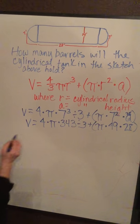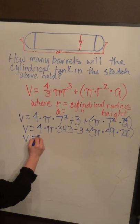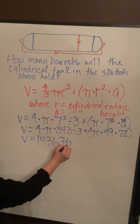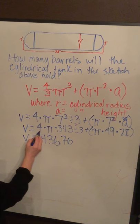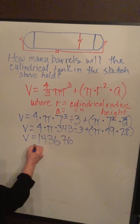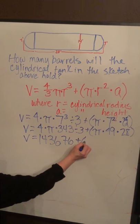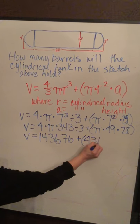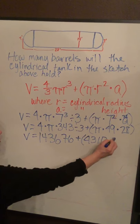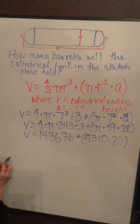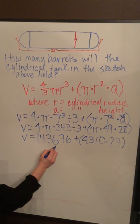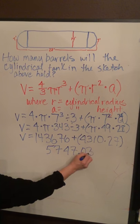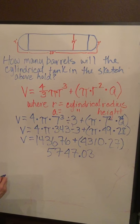Okay, volume is going to equal 1436.76, that's 4 times pi times 343 divided by 3, plus pi times 49 times 28 which equals 4310.27. That comes out to 5747.03, and if you look at your units of conversion.